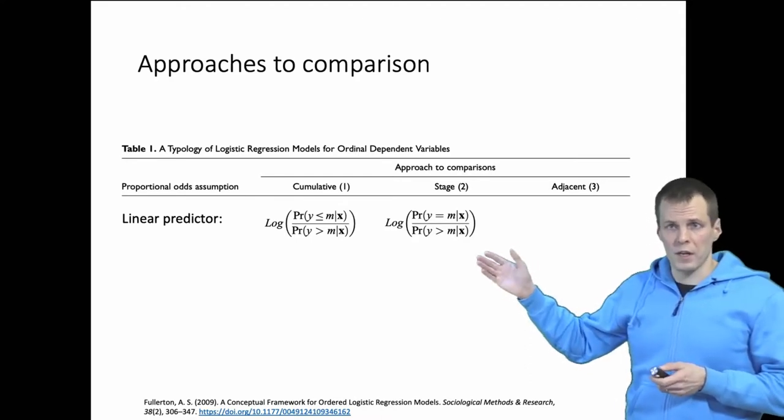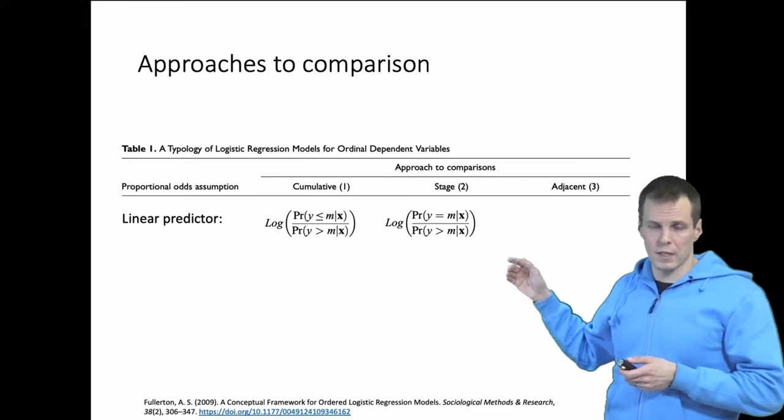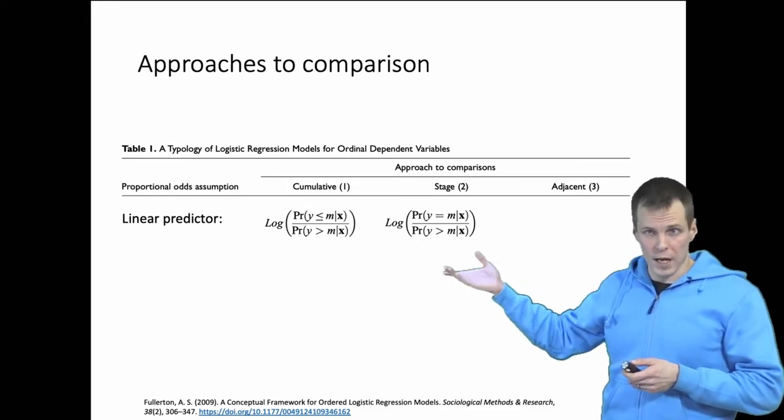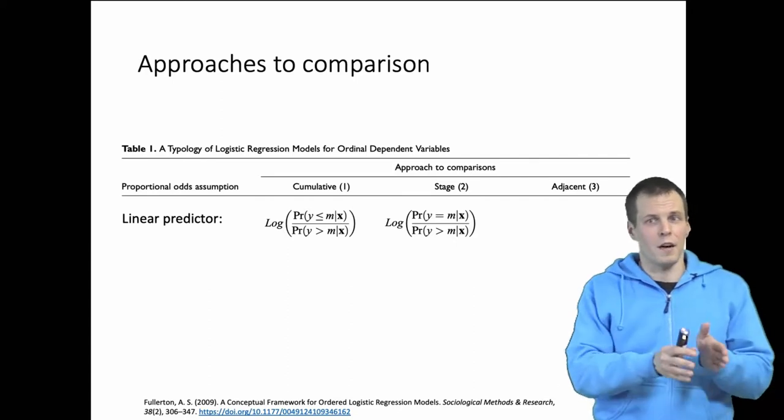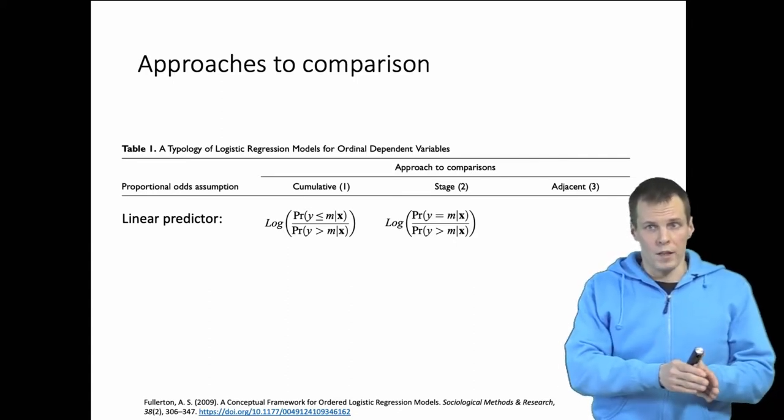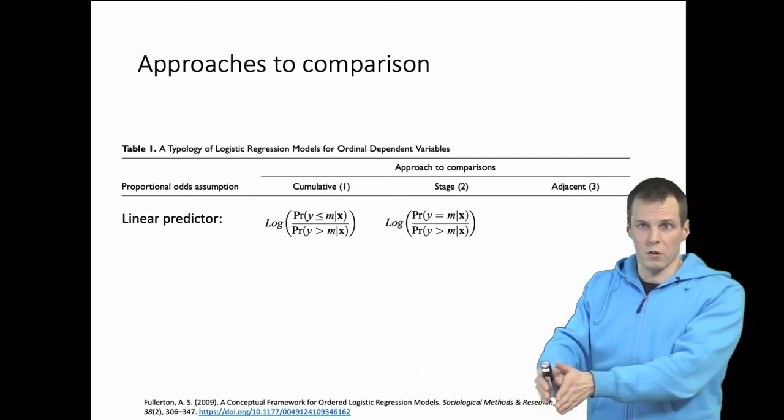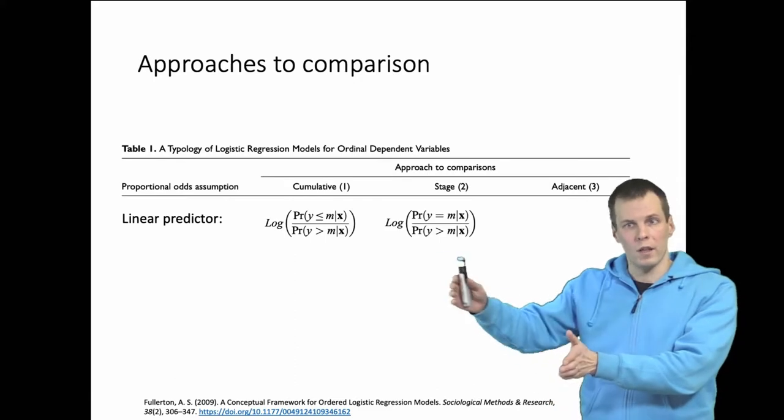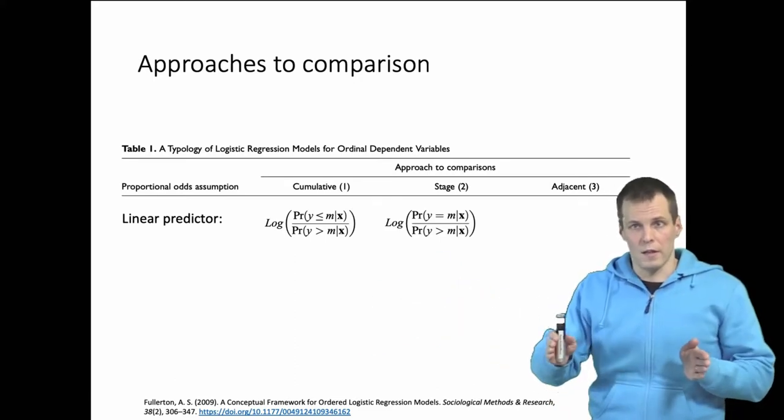That predict that people or companies follow through different stages. For example, if you want to explain technology adoption: first the person hears about technology, then they make a decision of whether they want to try the technology, when they try the technology whether they start using the technology, when they use the technology whether they abandon the technology.